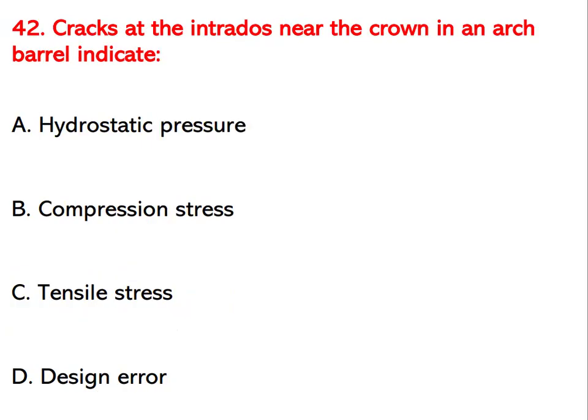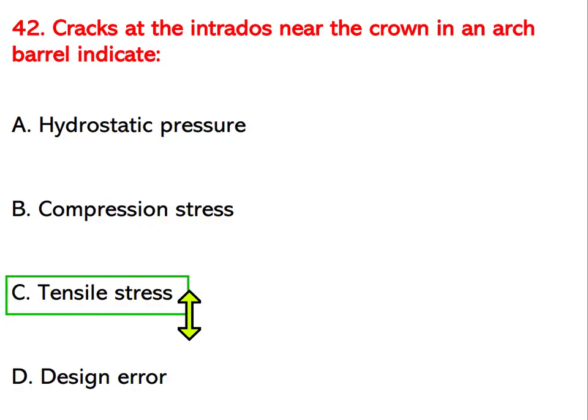Cracks at the intrados near the crown in an arch barrel indicate which condition? Options are hydrostatic pressure, compression stress, tensile stress, or degeneration. The right answer is tensile stress.